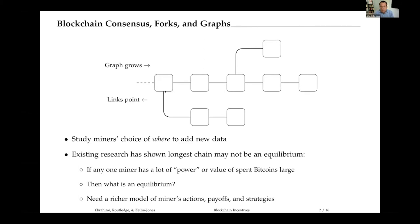So let me be clear: we're going to think very carefully about a blockchain database as a graph. Each block represents a block in the graph. I want you to think of the graph as growing to your right, so new blocks are being added to the right of the slide. Every block is chained to a previous block, so all of the links point in the opposite direction to the left. The key decision we're really trying to study in this model—and think kind of beyond the literature on protocols so far—is miner's decision of where to add new data. When a miner takes a pool of transactions, forms it into a block, and appends it to the blockchain, we're going to think very seriously about their incentives of whether they should add a block to which of the existing blocks in the graph.